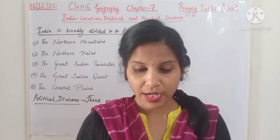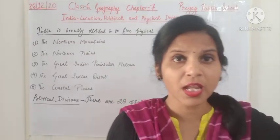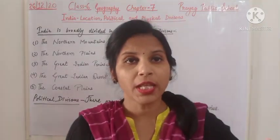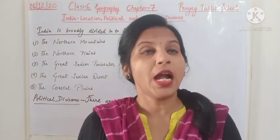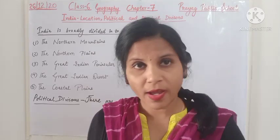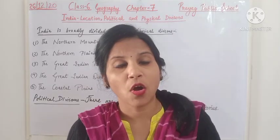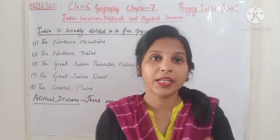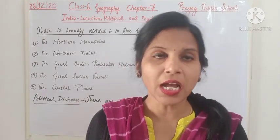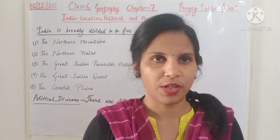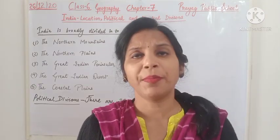The southernmost point of India is Indira Point, located in the Andaman and Nicobar Islands. And the southernmost point of the Indian mainland is Kanyakumari, also known as Cape Comorin.